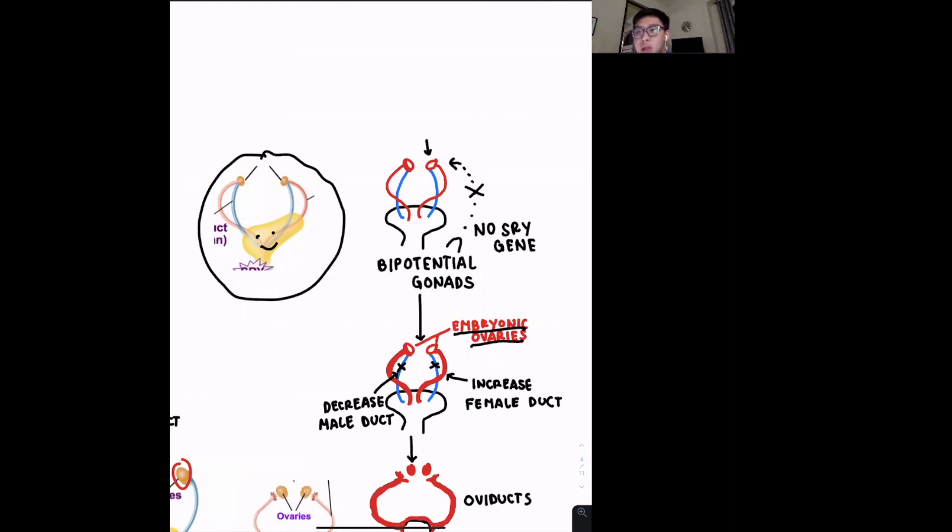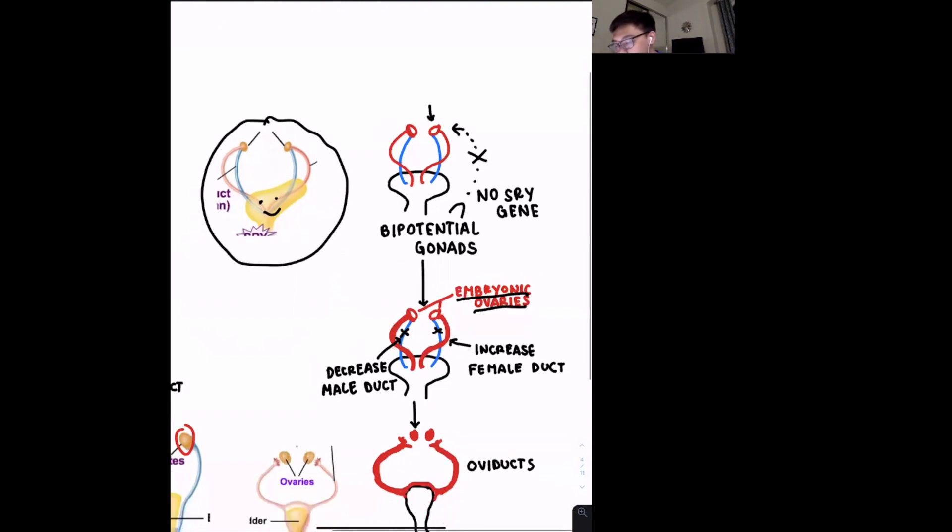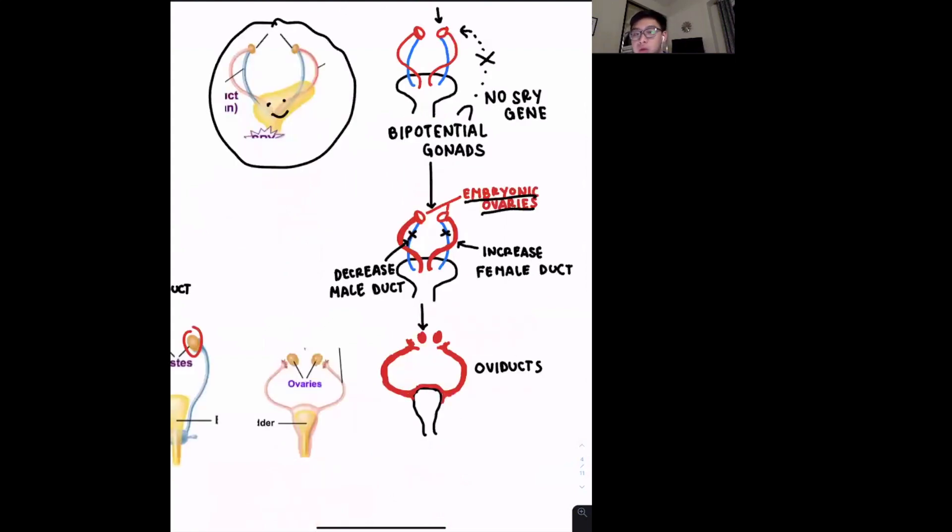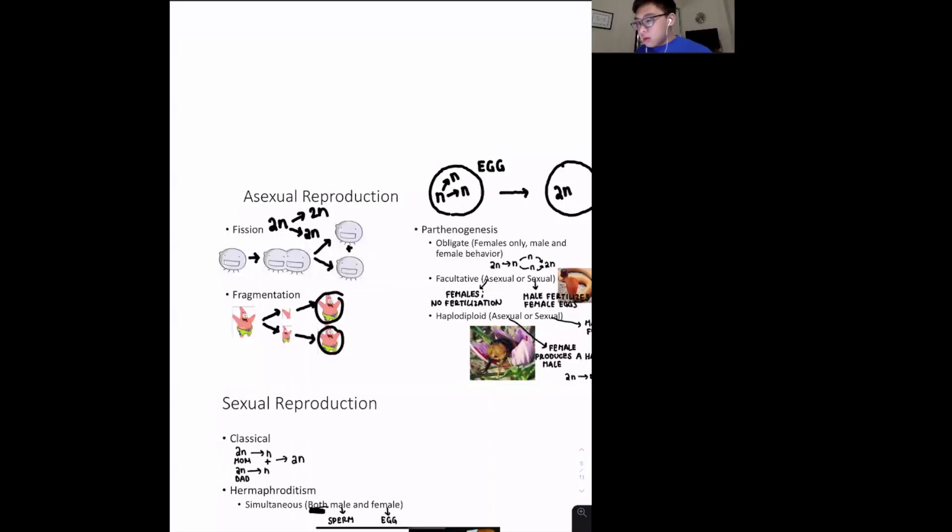And then by the standard development, we are going to have the female ducts increase while the male ducts will decrease. And therefore we are going to enter the female pathway. And then in this case, the fully developed female reproductive structure are the ovaries and the oviducts. And then the way I remember this is, to me at least, it looks like long hair as you can see right here.